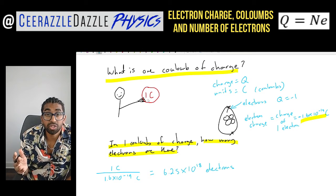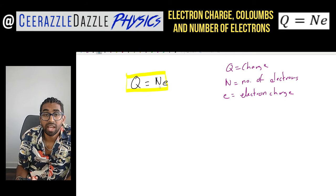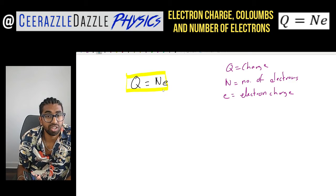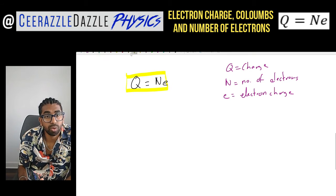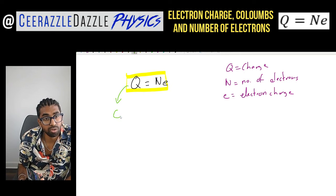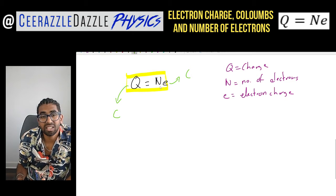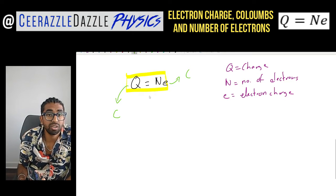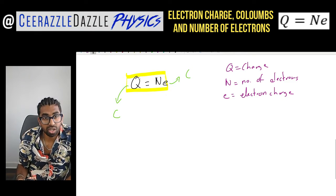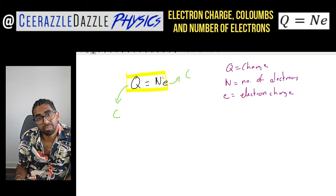This leads us to the following equation: Q equals N times E, where Q is the total charge, N is the number of electrons, and E is the electron charge. In terms of units: Q is measured in coulombs (C), the electron charge E is also measured in coulombs, and N is a number so it has no units. The equation balances out on both sides, giving us a relationship between total charge, the number of electrons, and the charge of one electron.